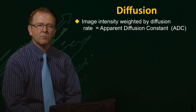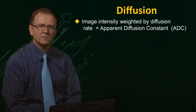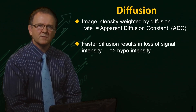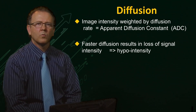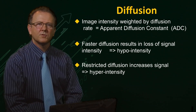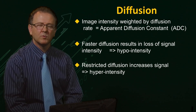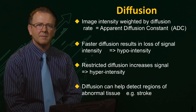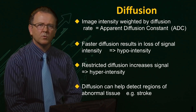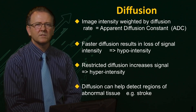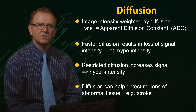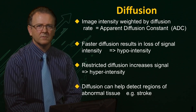The rate of diffusion is defined by a rate constant known as the apparent diffusion constant, and this ADC is a property of the particular tissue. Faster diffusion will result in loss of signal, whereas restricted diffusion, which reduces the ADC, will result in higher signal. Diffusion-weighted imaging can help detect regions of abnormal tissue where the tissue structure is damaged and the water diffusion is altered. This is important for the detection of stroke and cancer, where cellular integrity is lost, water is taken into the cells, and diffusion is significantly restricted, resulting in an increase in signal compared to healthy tissue.